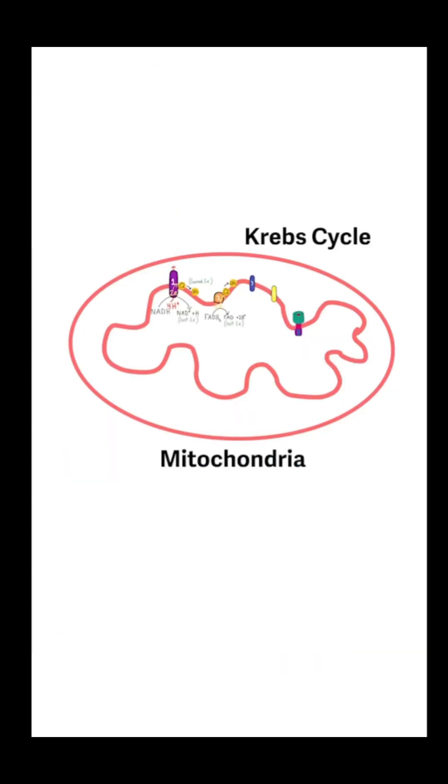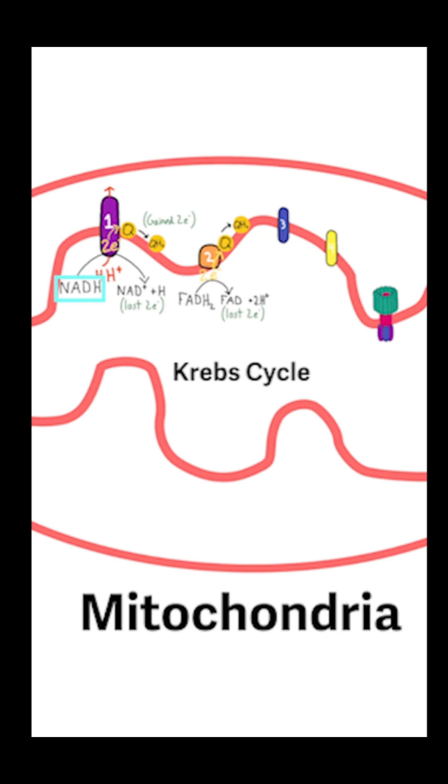The main purpose of the Krebs cycle, which takes place in the matrix of the mitochondria, is to produce the electron carriers NADH and FADH2.